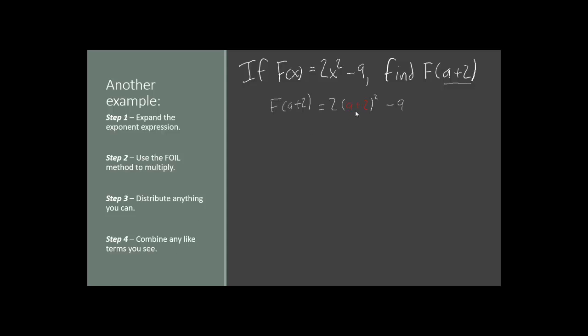Now if you've watched my previous episode, you know that if you have a binomial with a square above it, you can't just square both terms. You have to do the FOIL method to get 4 terms.